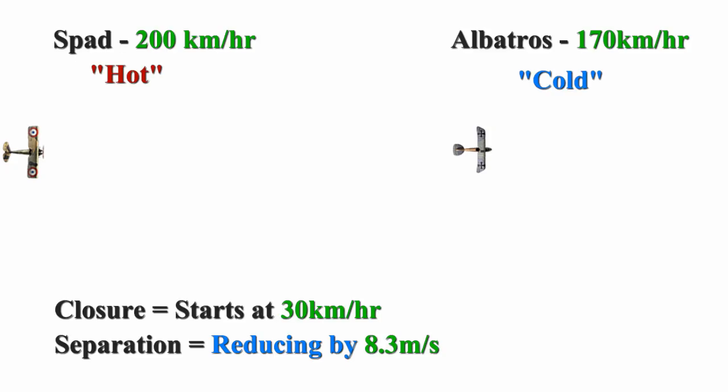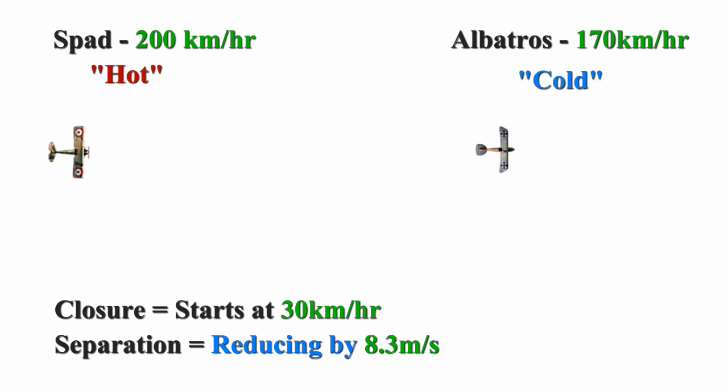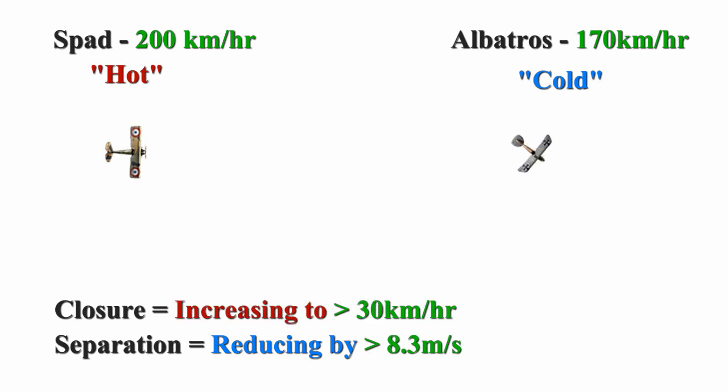Looking at these aspects, we have a SPAD who is hot on an Albatross who is cold. These hot and cold aspects combine for a low closure rate of 30 kmph, because they're both flying in the same direction.